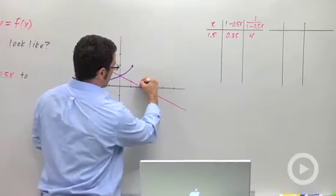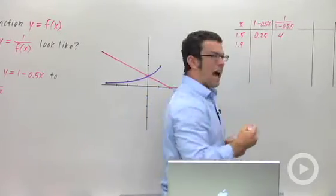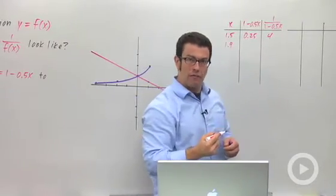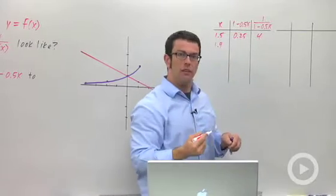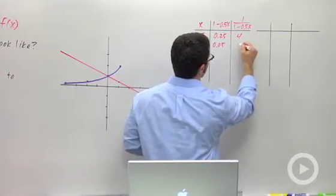If we wanted to, we could plot that point. It would be up here. 1.9. Half of that is 0.95. 1 minus 0.95 is 0.05. And the reciprocal of that is 20.